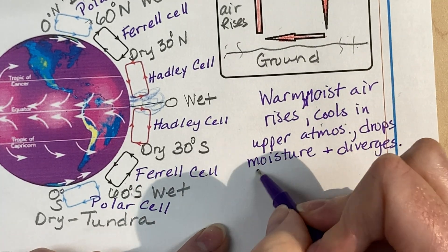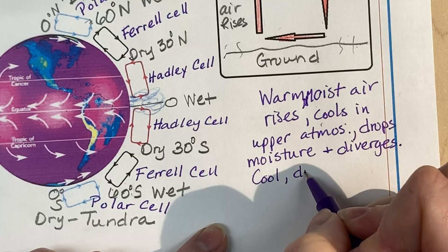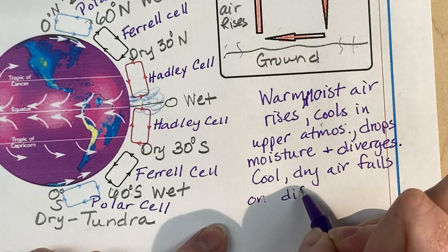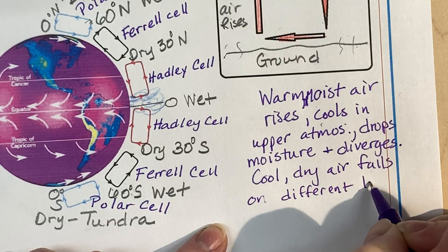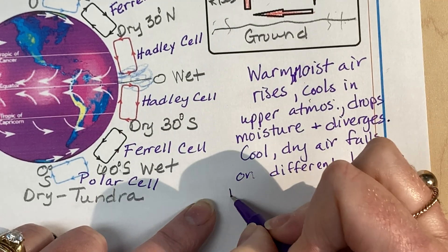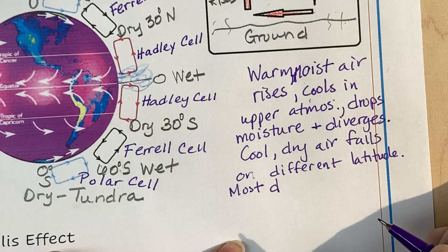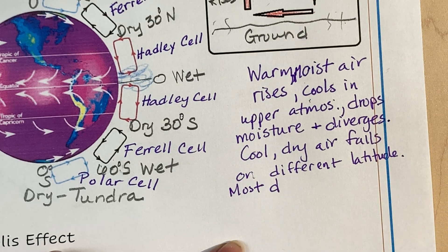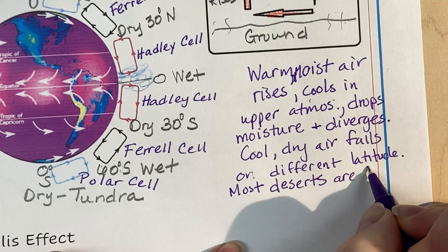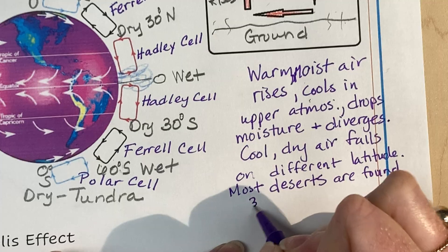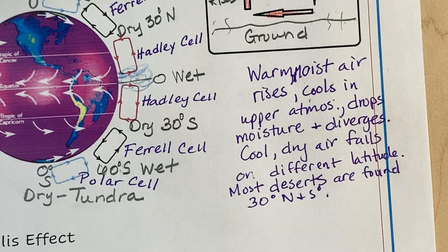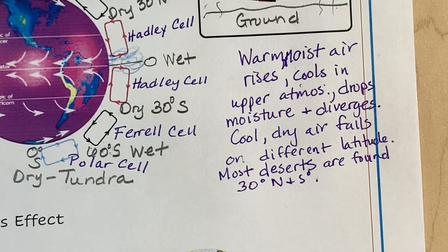And then cool, dry air falls on a different latitude. This is why most deserts are found at around, not exactly, but around 30 degrees north and south latitude. And that's the reason why. My writing's a little messy. I apologize.